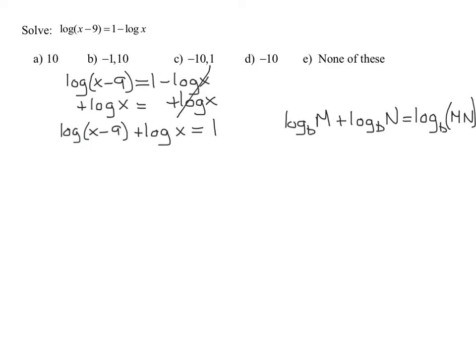Are my bases the same? Yes, they're both common logs, base 10. So I'm going to end up with the common log of the quantity x minus 9 times x. All I'm doing at this step is taking my two arguments and multiplying them together.